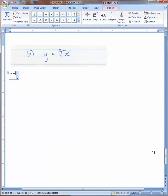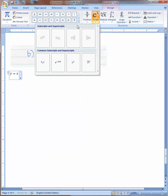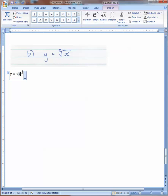First we need to rewrite the equation, and we're going to rewrite it as x to the power of a fraction, which is 1 over 3.